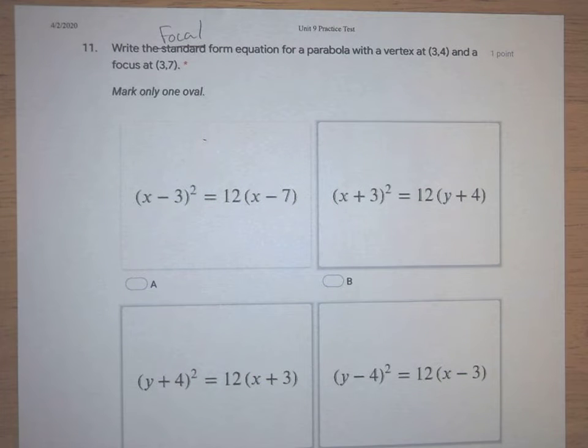Okay, write the focal form equation of a parabola with a vertex at (3,4) and a focus at (3,7). There's a couple things that we need to know here in order to write this equation.